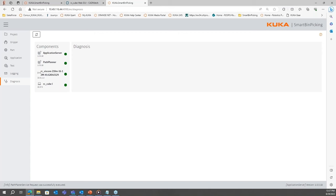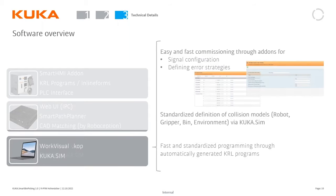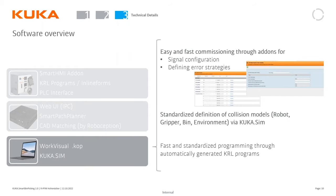To summarize the setup workflow: on your computer, you'll use WorkVisual with one of our KUKA option packages for signal configuration, error strategy, and basic general robot setup and commissioning. You'll also use KUKA SIM on the computer to create the environment, and that all gets loaded up into the UI.